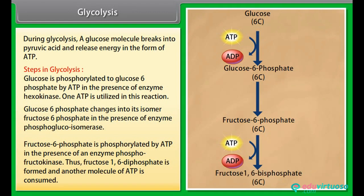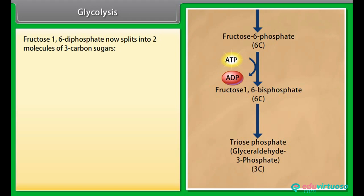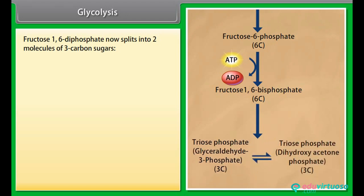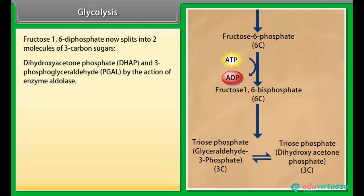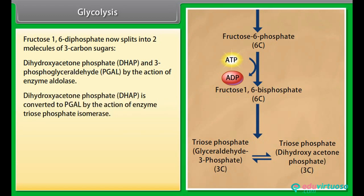Fructose-1,6-diphosphate is formed and another molecule of ATP is consumed. Fructose-1,6-diphosphate now splits into two molecules of 3-carbon sugars — dihydroxyacetone phosphate (DHAP) and 3-phosphoglyceraldehyde (PGAL) — by the action of enzyme aldolase. Dihydroxyacetone phosphate (DHAP) is converted to PGAL by the action of enzyme triosephosphate isomerase.